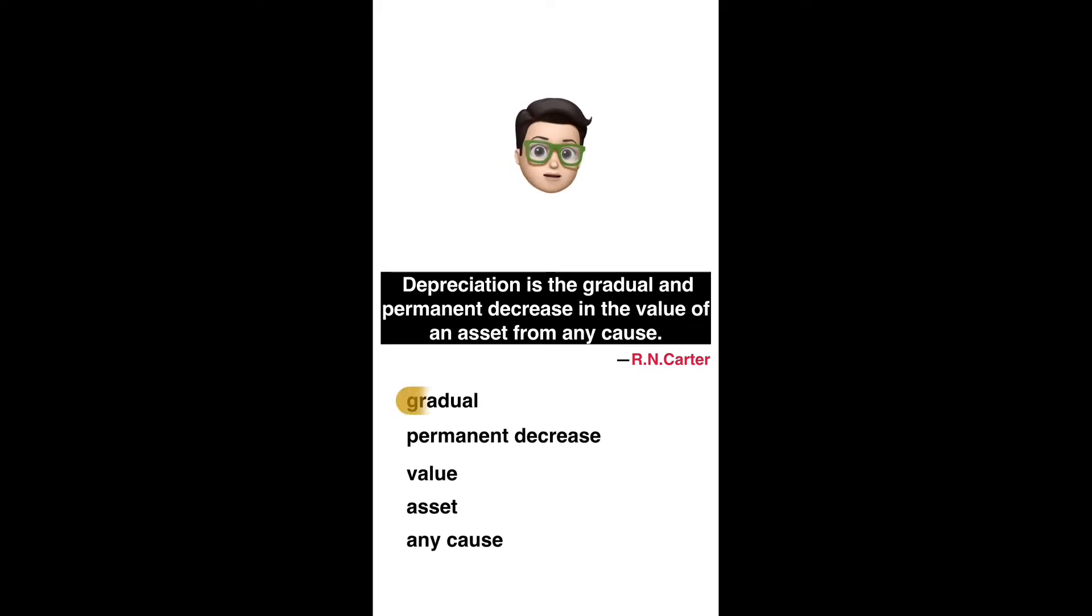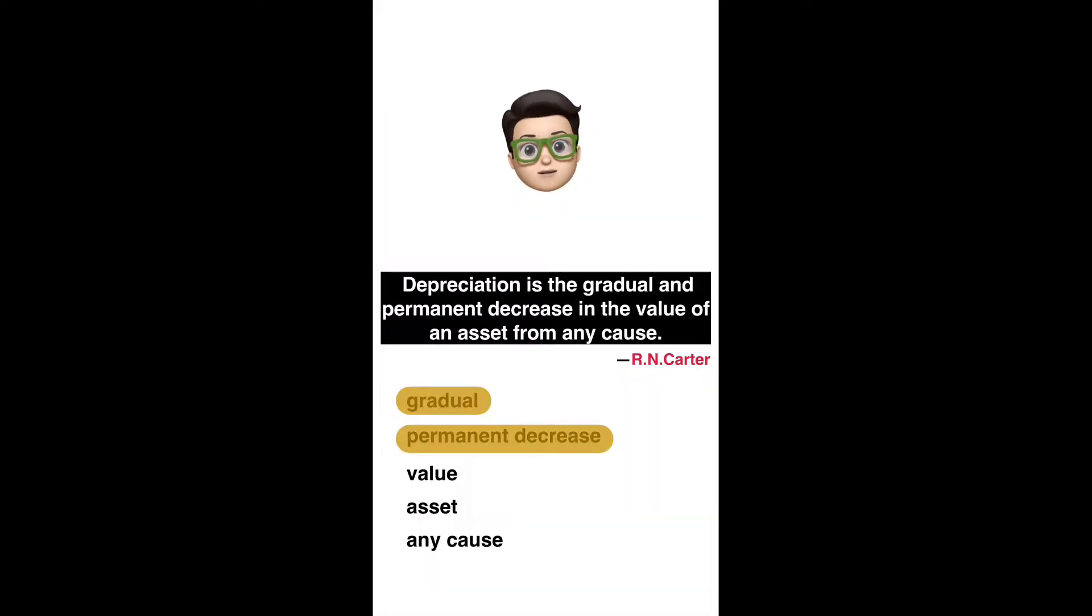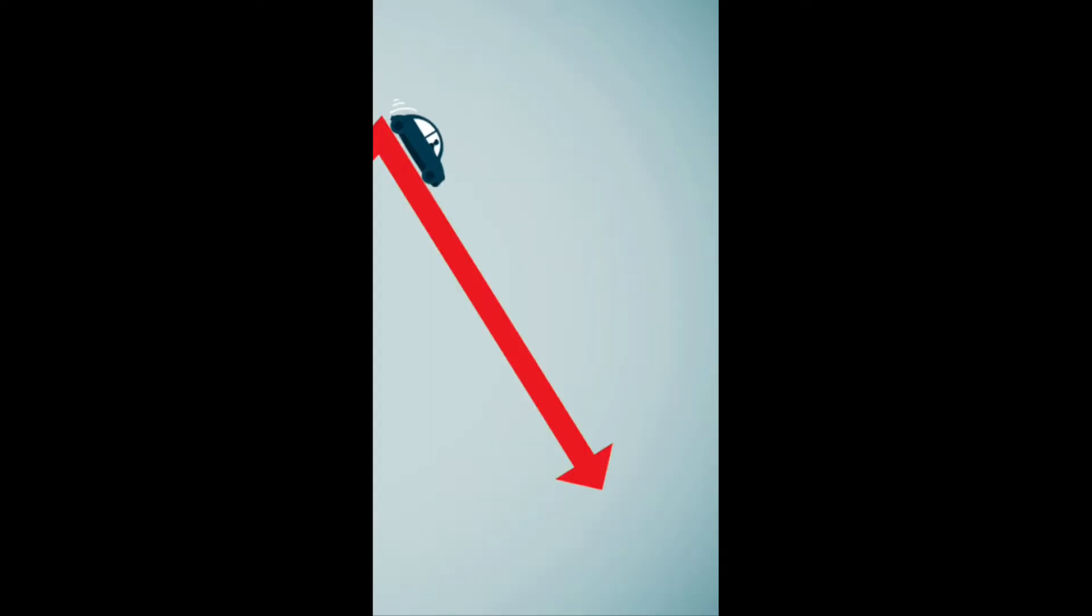Gradual, which means continuous use of the asset. Permanent means prices permanently deducted from some assets and these are not just fluctuations.